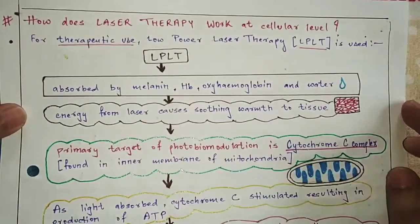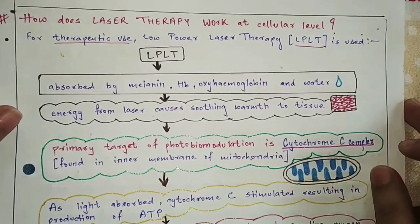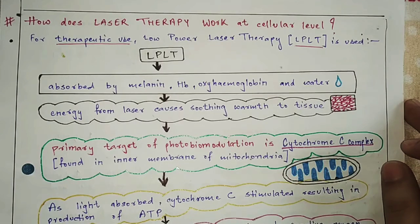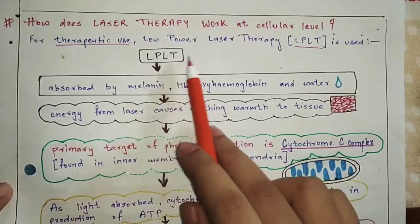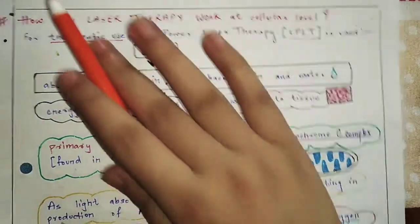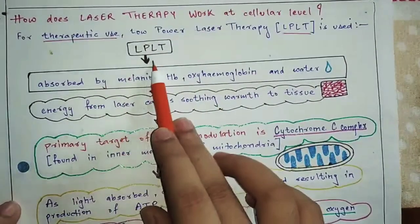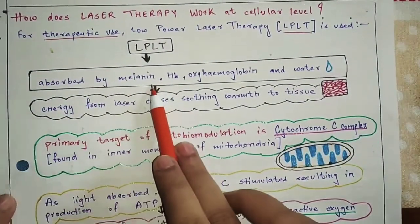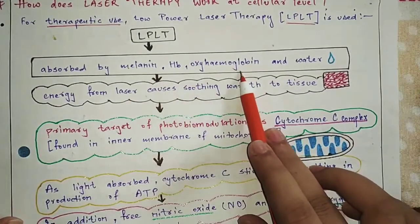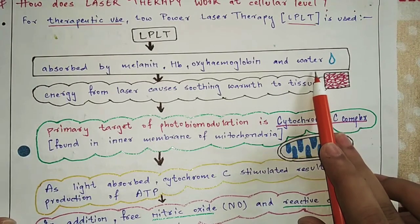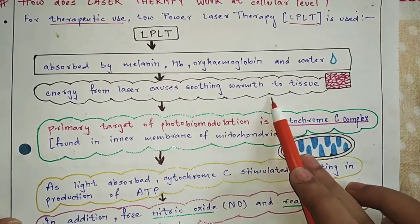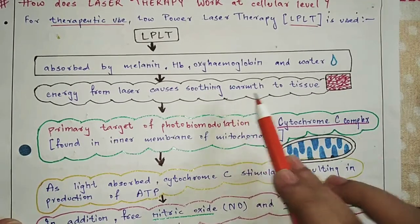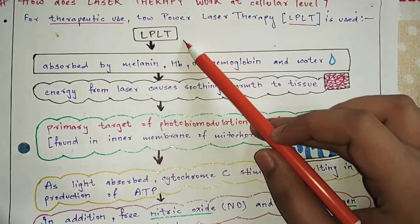How does laser therapy work at the cellular level? When we talk about therapeutic use, we talk about low power laser therapy. When we use low power laser therapy on the skin, the light is absorbed by melanin, hemoglobin, oxyhemoglobin, and water. When light is absorbed, it will produce soothing warmth in the tissue. This process is called photobiomodulation.